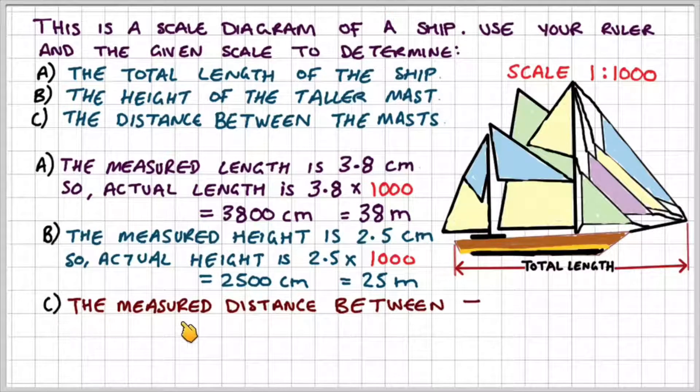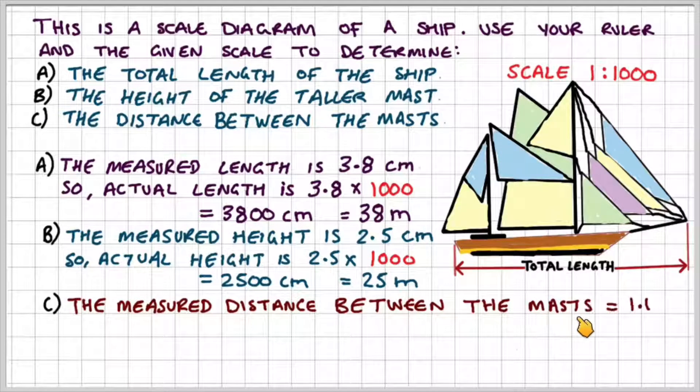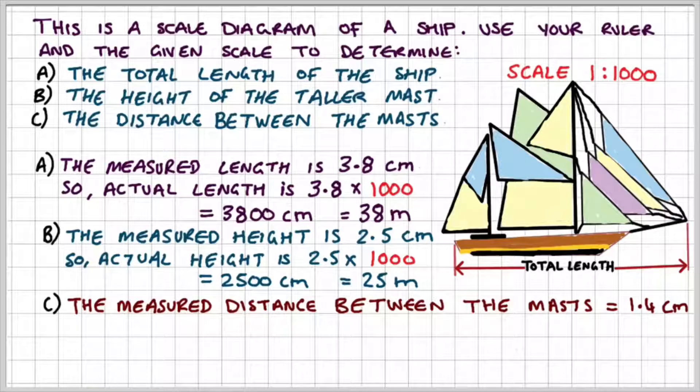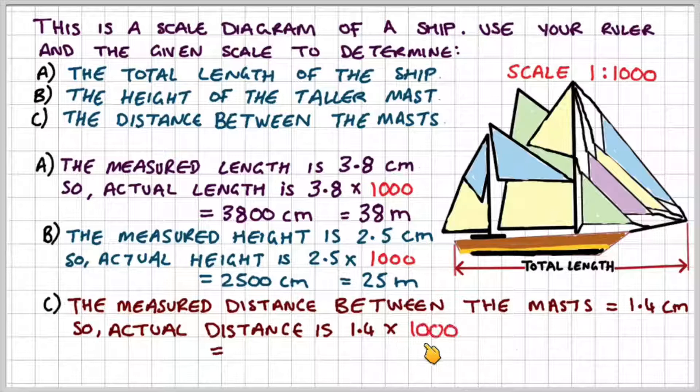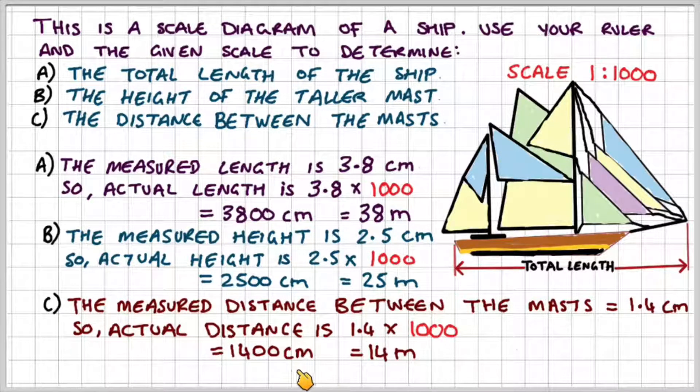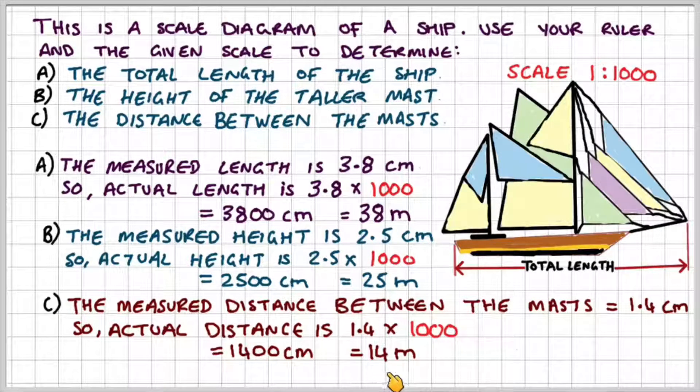And then finally part c the measured distance between the masts was 1.4 centimeters so the actual distance would be 1.4 times a thousand which will give us 1,400 centimeters or 14 meters.